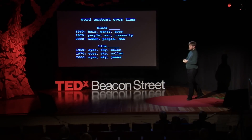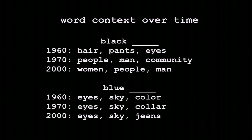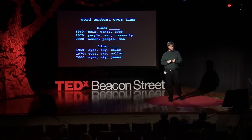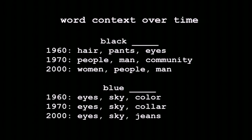Another cool thing: you can look at word context over time. If we take the word 'black' and ask what word comes after it most often in written English — in 1960 it was 'hair,' 'pants,' and 'eyes,' because black was a color term. But the 60s had major cultural shifts, and by 1970 'black' was very much a racial term: 'people,' 'man,' 'community.' That has persisted to today. In contrast, 'blue' stayed a color word — 'eyes,' 'sky,' 'color' — though 'blue collar' became a phrase, and by 2000 it's 'eyes,' 'sky,' and 'jeans.' The ability to analyze this kind of context lets you understand cultural and historical trends.